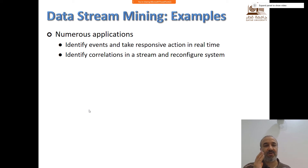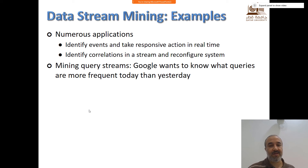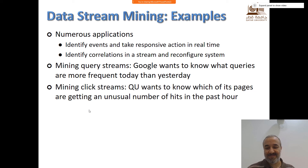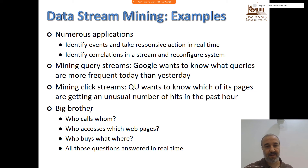Applications: we identify events and take responsive actions. We can also capture correlations in a stream and reconfigure the system. Another example — Google wants to know what queries are more frequent today than yesterday. Mining click streams: for example, a university wants to know which of its pages are getting an unusual number of hits in the past hour. Big brother applications: who is doing what, who calls whom, who accesses which pages, who buys what — monitoring transactions of users. So many applications.